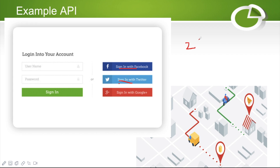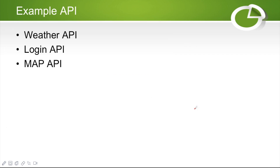Another example: if you're building an e-commerce app where you track where a parcel actually is, you can use the Google Maps API. So the common examples we've covered are the weather API, the login API, and the maps API.